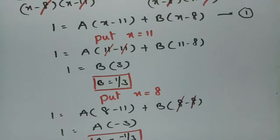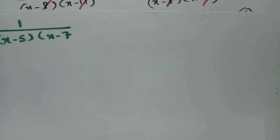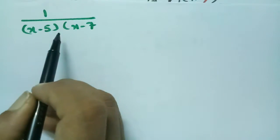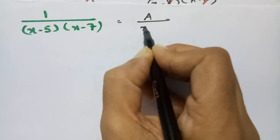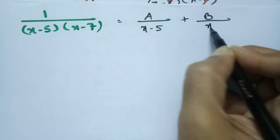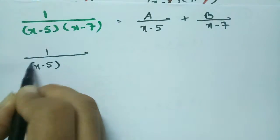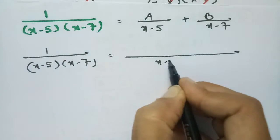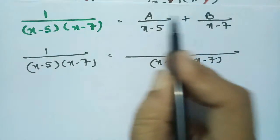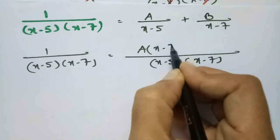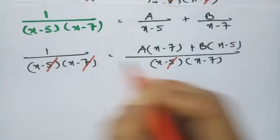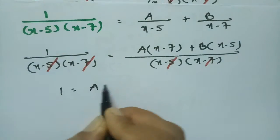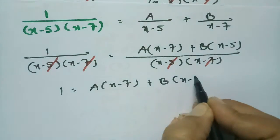The next equation is 1 by (x minus 5) into (x minus 7). To resolve this, I write it as A by (x minus 5) plus B by (x minus 7). So, 1 by (x minus 5)(x minus 7) equals — taking LCM — (x minus 5)(x minus 7). Cross multiplying: A(x minus 7) + B(x minus 5). Cancelling factors on both sides: 1 = A(x minus 7) + B(x minus 5).